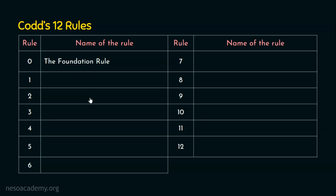Let's now move on to rule number 1, which is the information rule. It means all information in a relational database is represented explicitly at the logical level in exactly one way — by values in the table. In simple terms, all the information processed in RDBMS is represented explicitly at the logical level by referring to the values in the table.